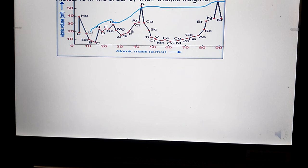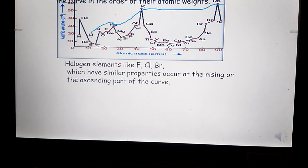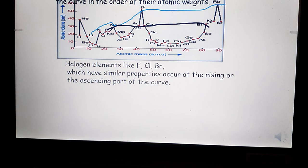Then he observed that halogen elements like chlorine and bromine, which have similar properties, occur at the rising or extending part of the curve. This blue line indicates the halogen elements.